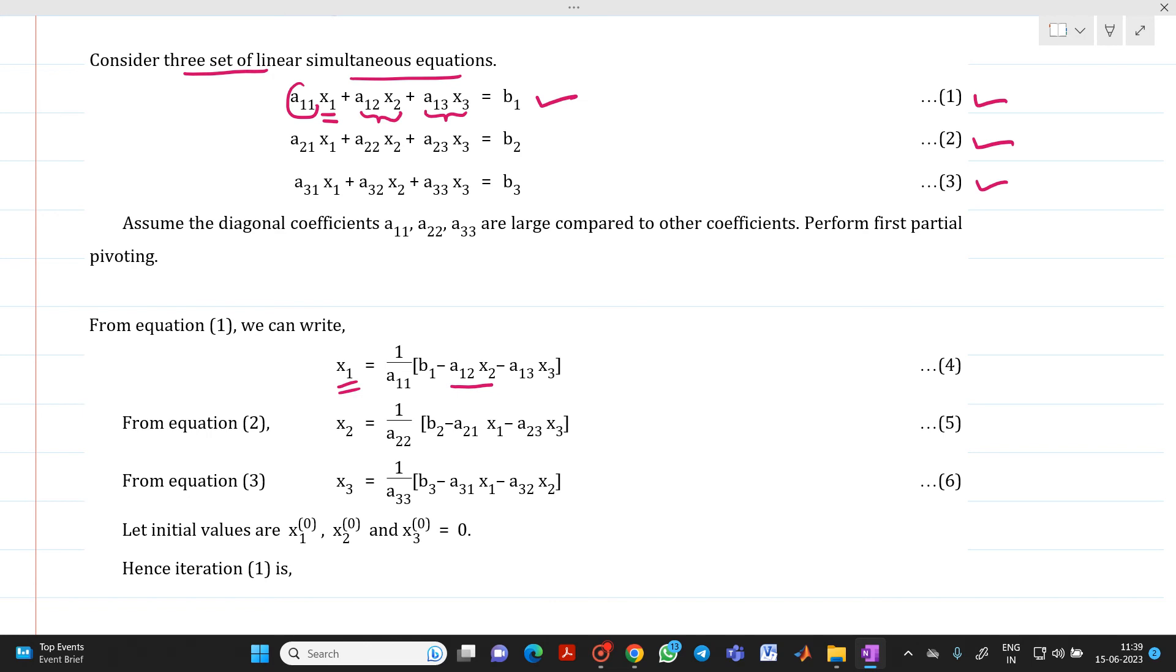Similarly, we will write the equation for x2 from equation 2, which will be b2. Shift these two terms to the right-hand side: minus a21x1 and minus a23x3. The coefficient of x2 is a22. If shifted to the right-hand side, we will get 1 upon a22.